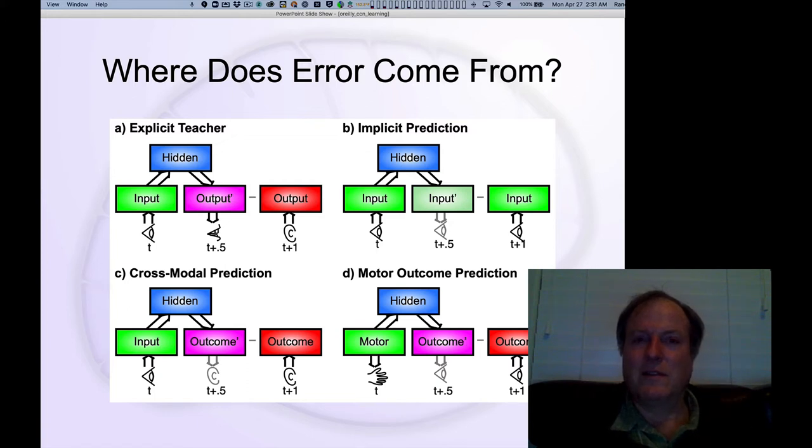But when you move your eyes, it doesn't move. And so that is an indication that we're actually, there's an important difference there. We can predict the effects of our internally generated eye movements. We've had a lot of practice doing that. And therefore it stabilizes the world. And that tells us one clue that we are doing this predictive learning.